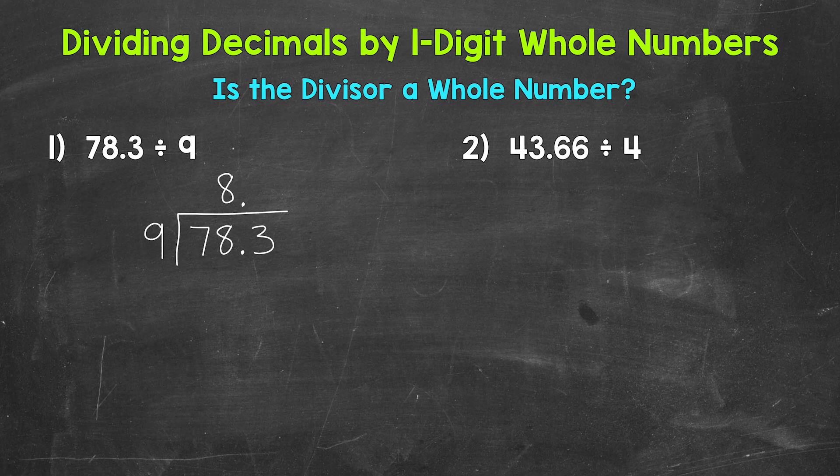Make sure to put the 8 above the 8 in 78, not above the 7. We used both the 7 and 8 and did 78 divided by 9. So again, that 8 needs to go above the 8. Now we multiply 8 times 9, 72.